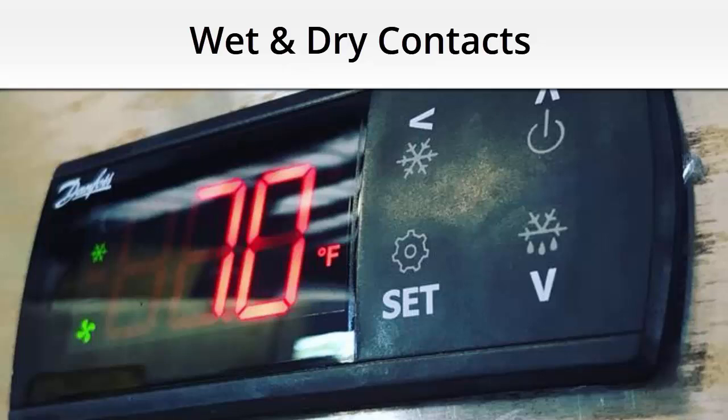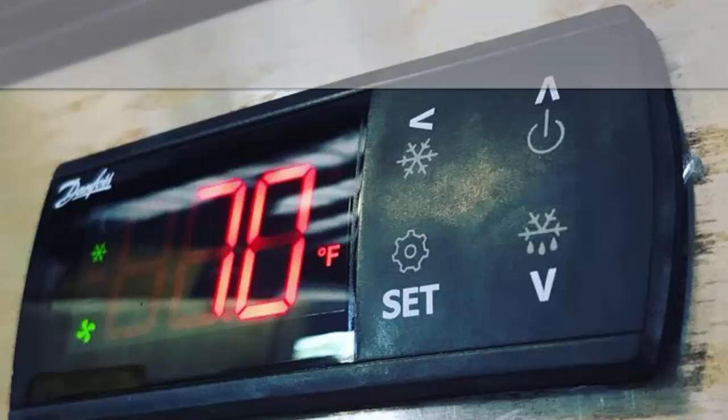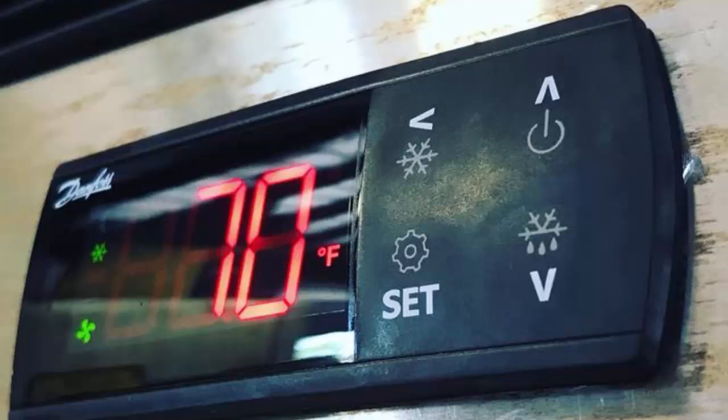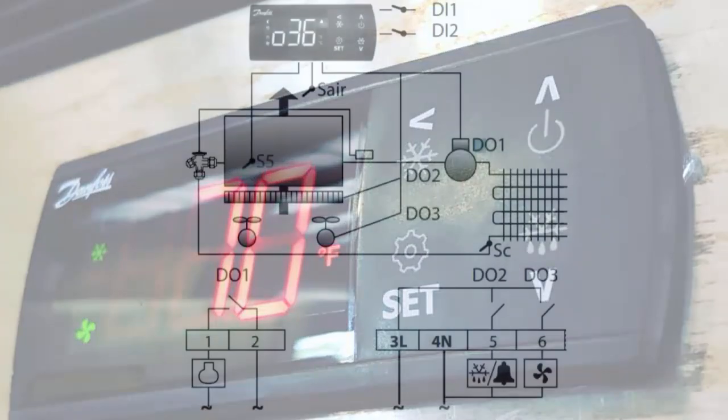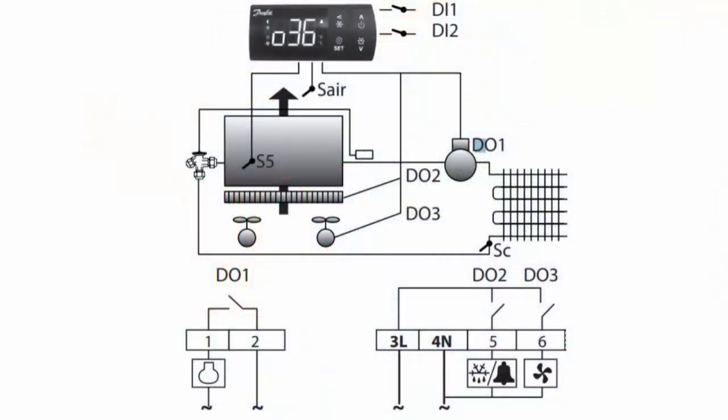Hey, this is Brian with HVAC School at HVACrSchool.com and the HVAC School podcast. This video is about dry and wet contacts, and I'm using the Danfoss ERC-213 diagram to demonstrate this. It was a really good example I recently worked on.